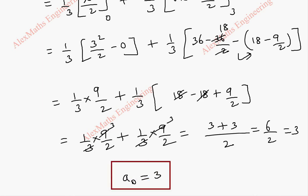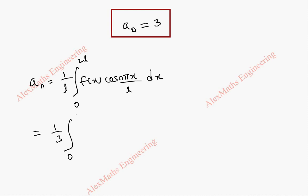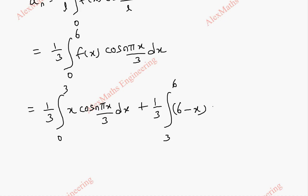Next, we are going to proceed with finding an. The formula is 1 by l integral 0 to 2l f of x cos n pi x by l dx. Using l as 3, we have 1 by 3 integral 0 to 6 f of x cos n pi x by 3 dx. We are going to split this into two parts: one is 1 by 3 integral 0 to 3 x cos n pi x by 3 dx, plus 1 by 3 integral 3 to 6 of 6 minus x into cos n pi x by 3 dx.